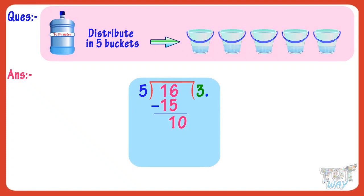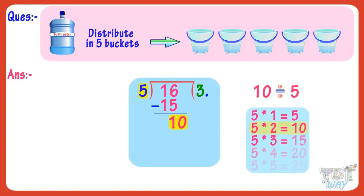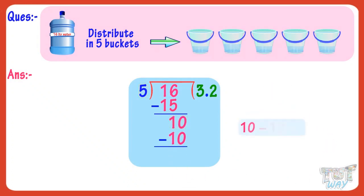Now we have to divide 10 by 5. 5 multiplied by 2 equals 10. So write 2 in the quotient, to the right of the decimal, and write 10 below 10. Now subtract 10 from 10, and we get 0.